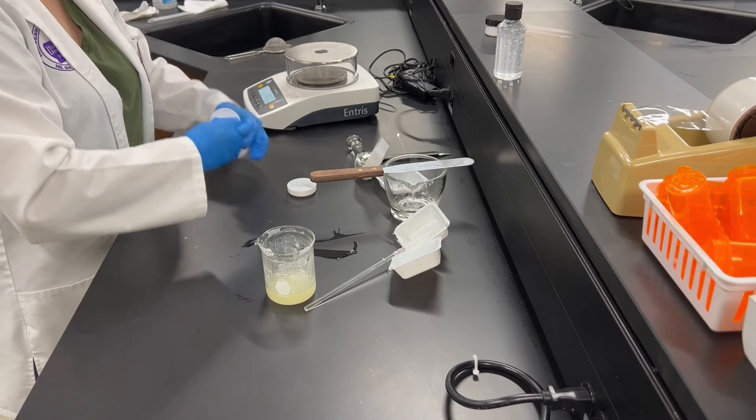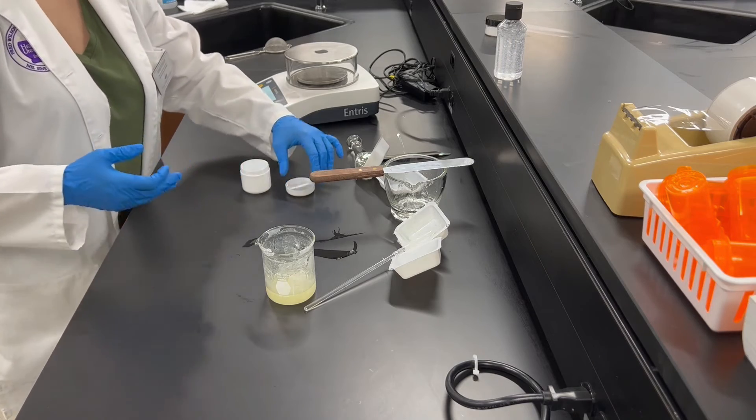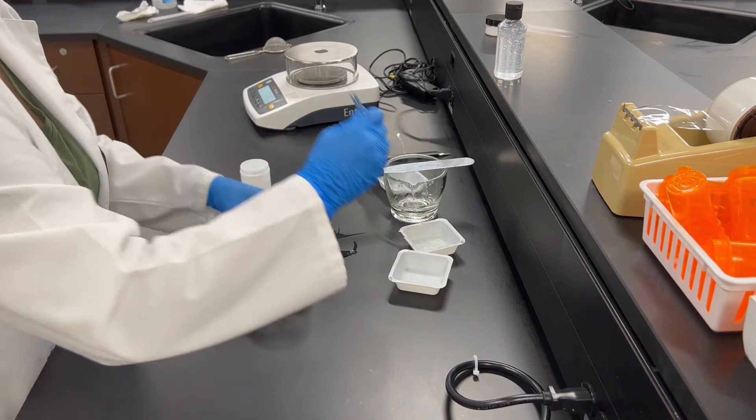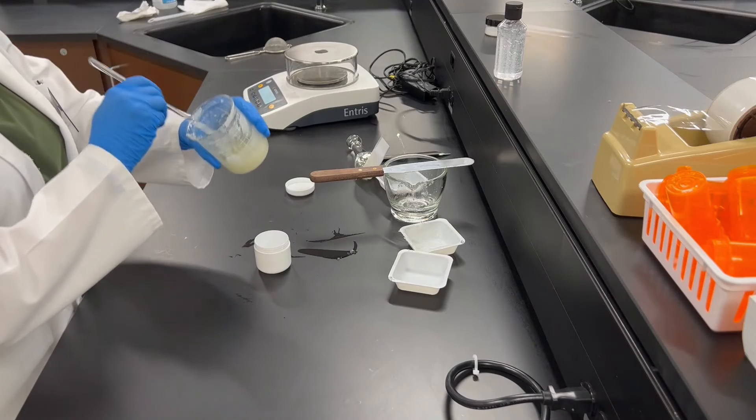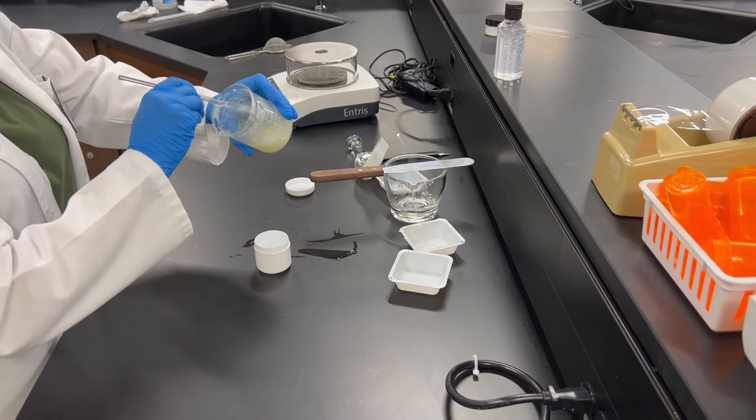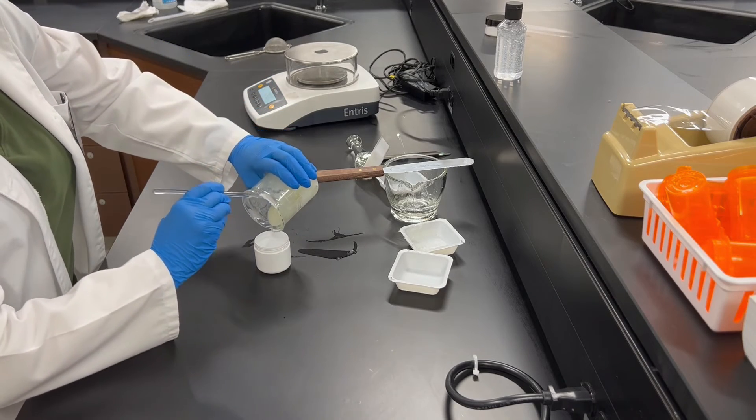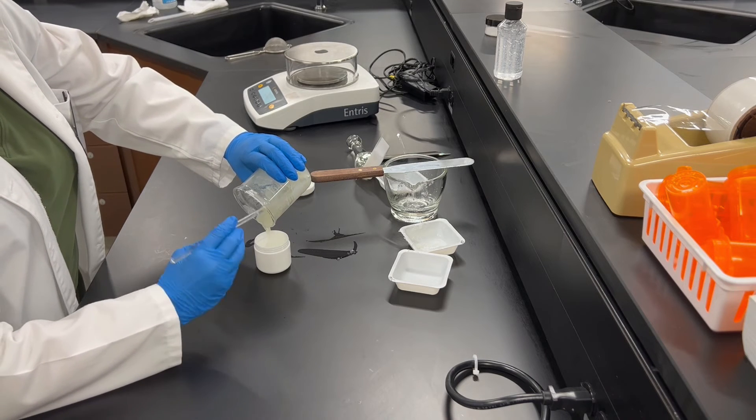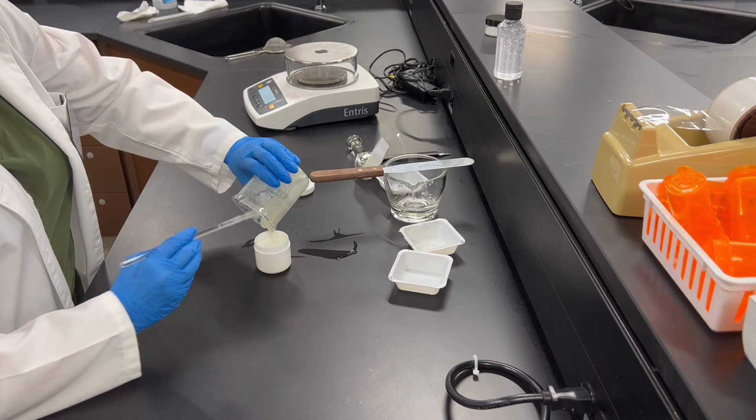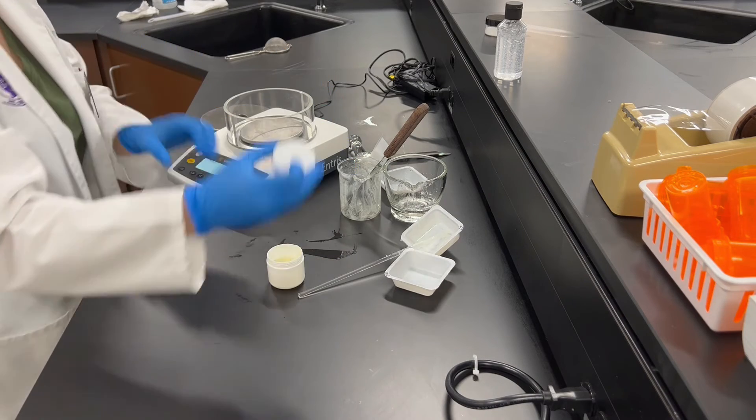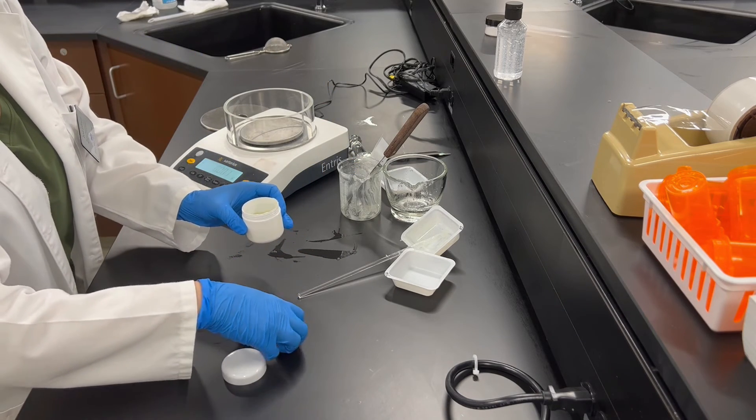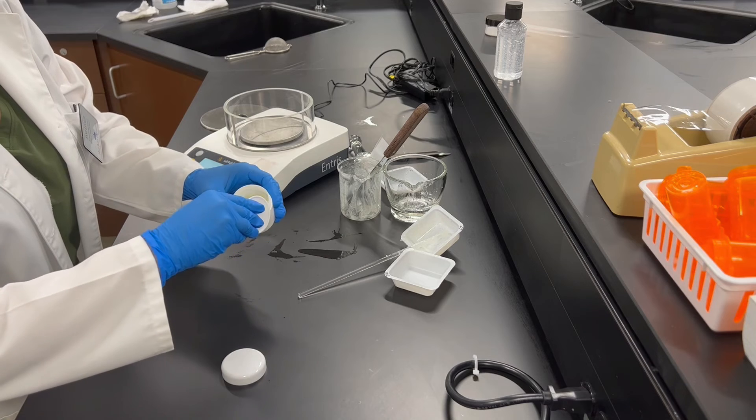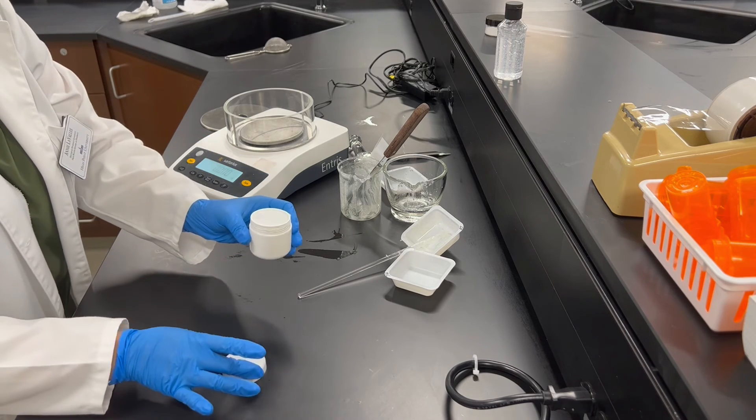Then you can go ahead and take your empty ointment jar, and then you are going to put your ingredients from the beaker into the ointment jar. You can take it out with the stir rod or you can use a spatula as well. Either one works, but the spatula will help you in the long run. Once that is all out of the beaker, you can go ahead and cap that.